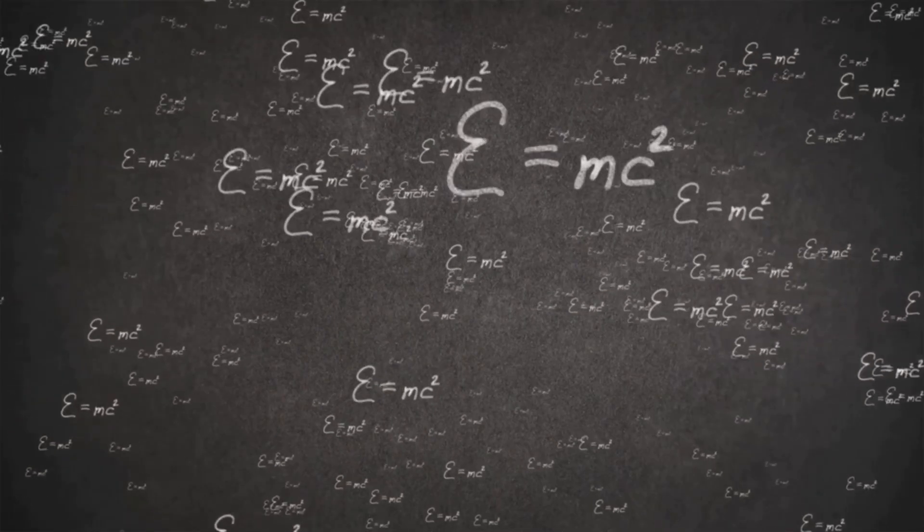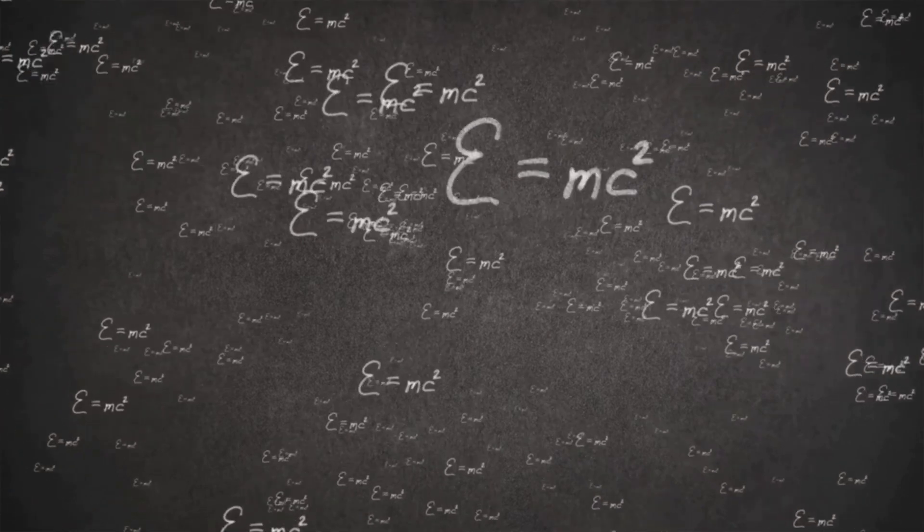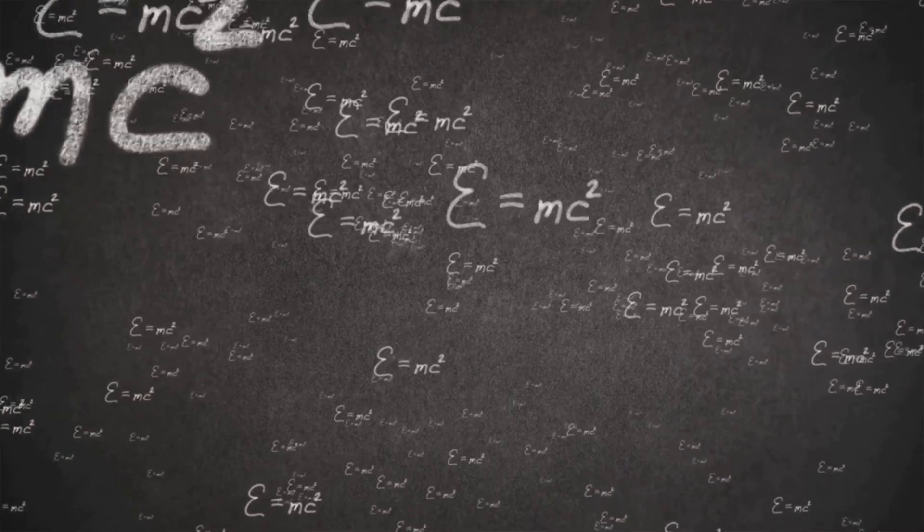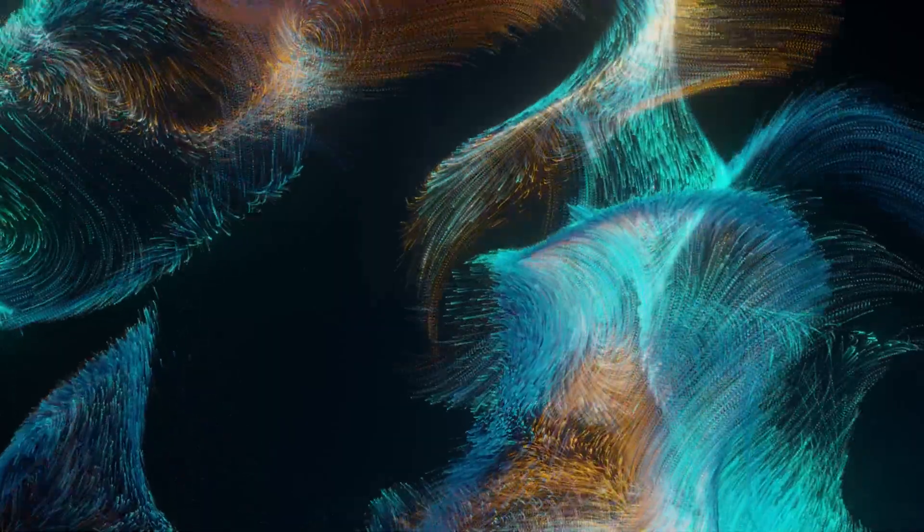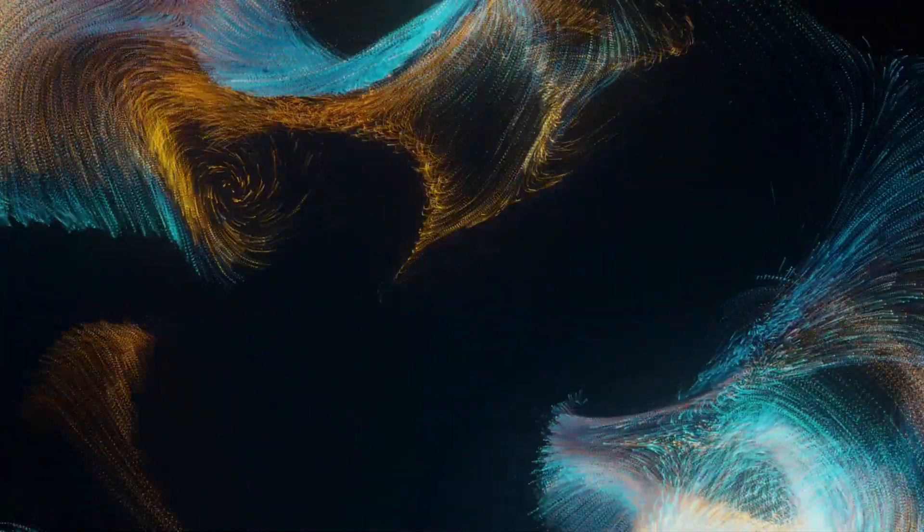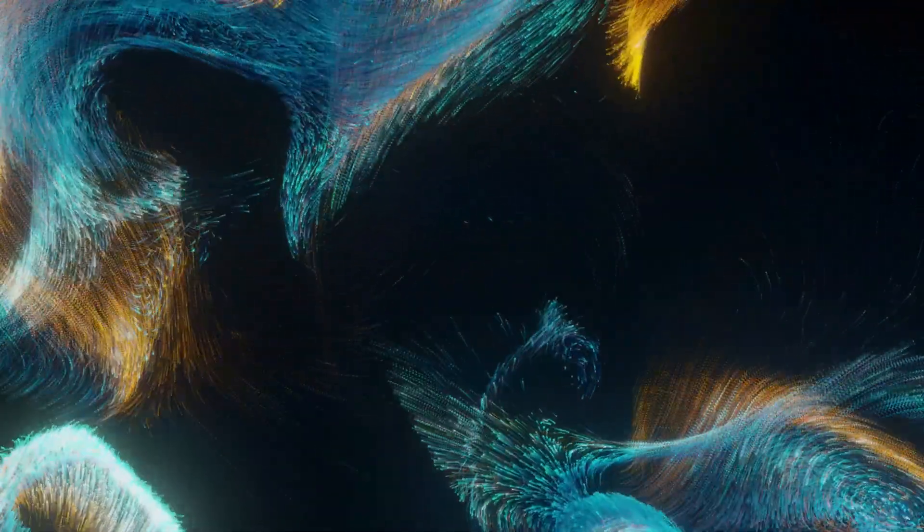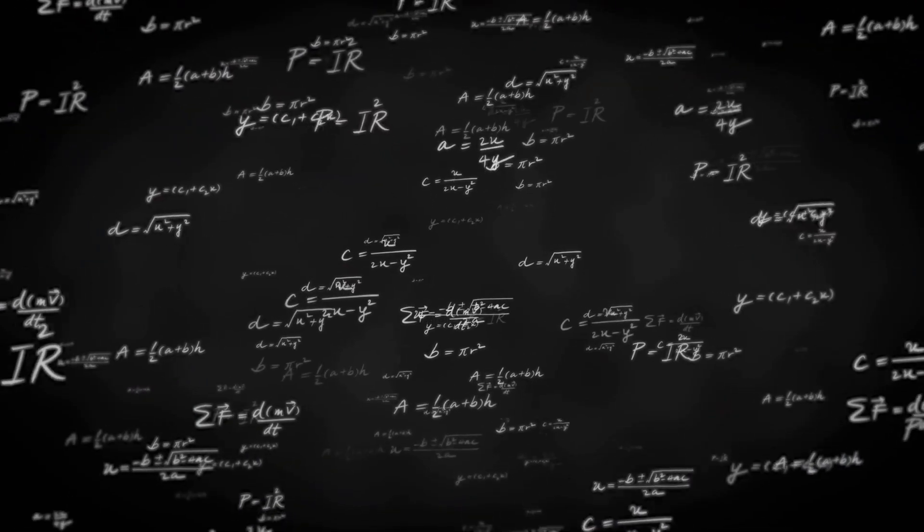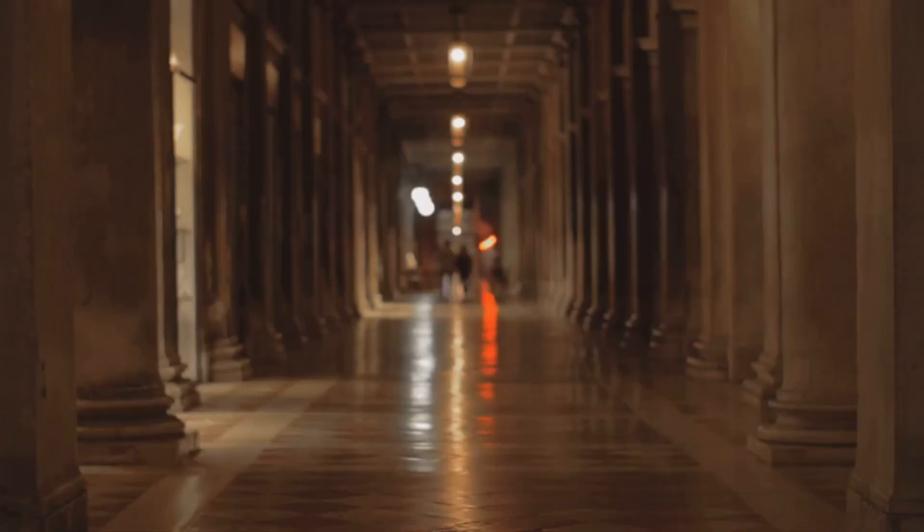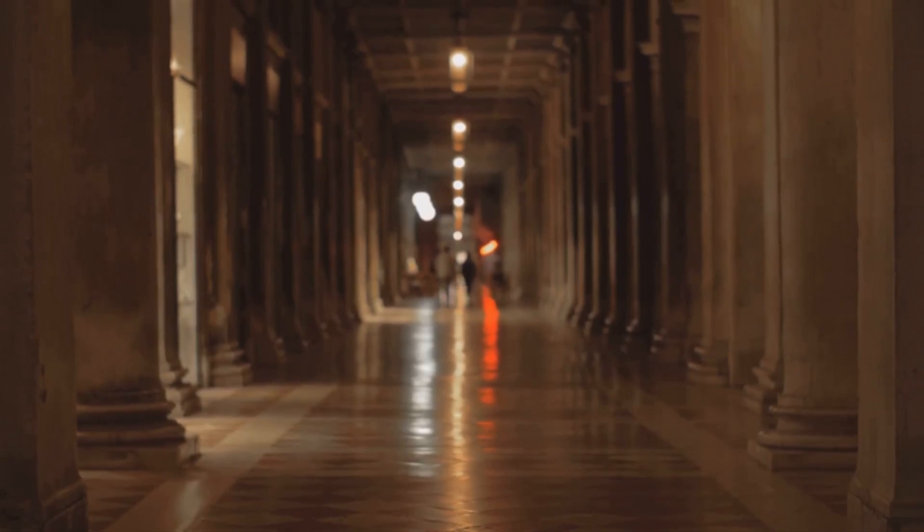In 1900, Planck introduced a constant, now called Planck's constant, that defined the energy of quanta, the smallest indivisible packets of energy. This discovery laid the groundwork for quantum mechanics, the most precise and bewildering science humanity has ever developed. But for Planck, the implications went far beyond equations and laboratory measurements. Toward the end of his life he made a statement that still resonates like a bell in the corridors of science.